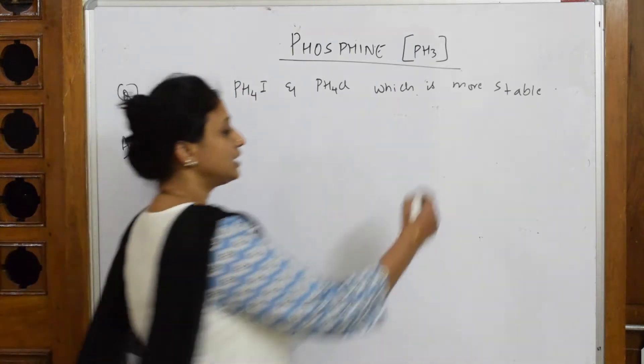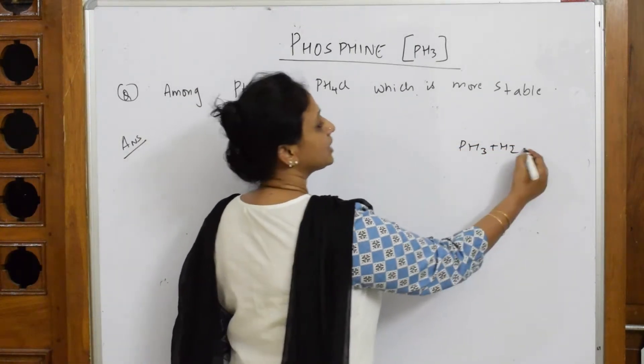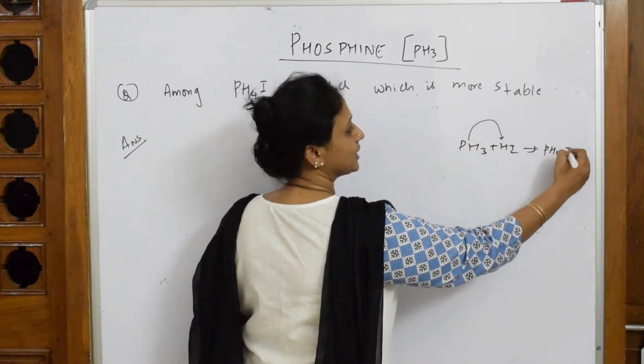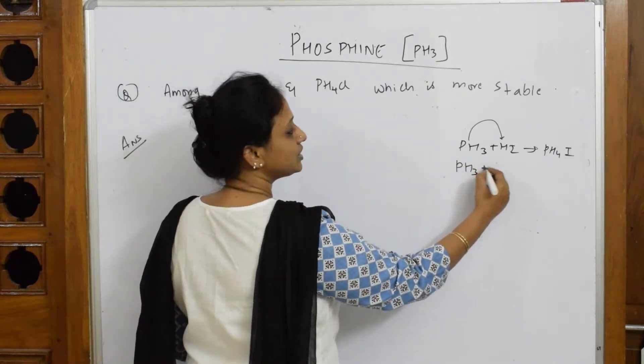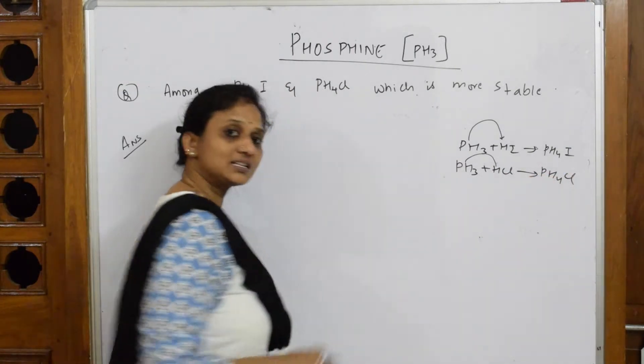So how do you prepare this? We have taken PH₃ and I added HI to this, then I got - it's going to share this electron pair - I got PH₄I. Now how did I get PH₄Cl? I have taken phosphine, I added HCl, then I got PH₄Cl, simple. Now they're asking me among these two which is more stable.